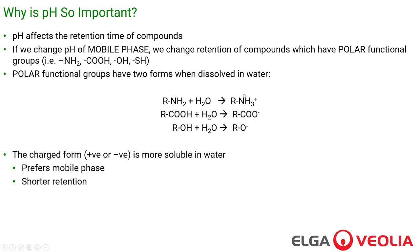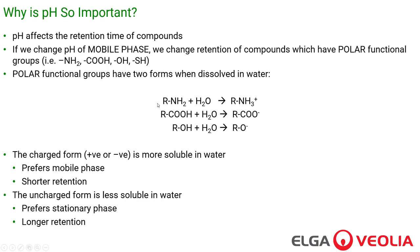The charged forms are much more soluble in water. They will prefer the mobile phase, have less affinity for the stationary phase, and will have shorter retention times. So if we don't control pH, the substance has a very unstable retention time. The uncharged form is less soluble in water — it will prefer the stationary phase and give us longer retention. Mobile phase pH controls this equilibrium. We can shift it one way or the other to make the substance charged or uncharged by modifying the pH of the mobile phase.